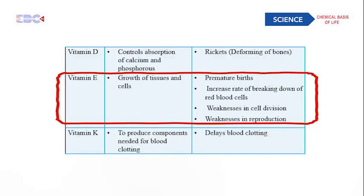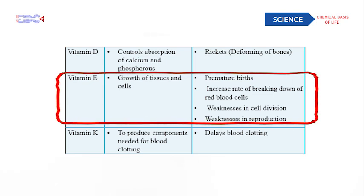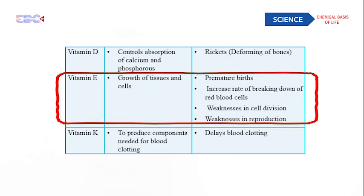Vitamin E helps in the growth of tissues and cells. Its deficiency symptoms include premature birth — meaning birth takes place 2–3 weeks before the due date — an increased rate of breaking down of red blood cells, weakness in cell division, and weakness in reproduction.